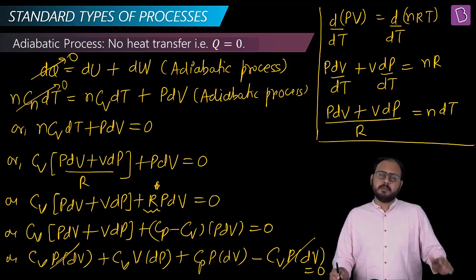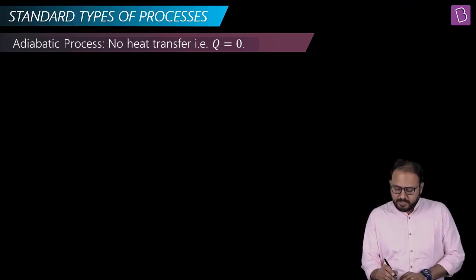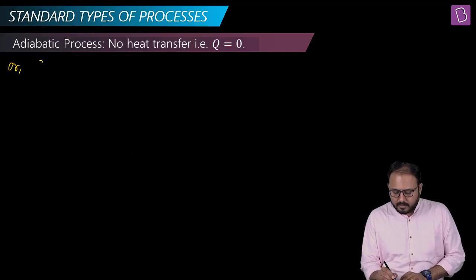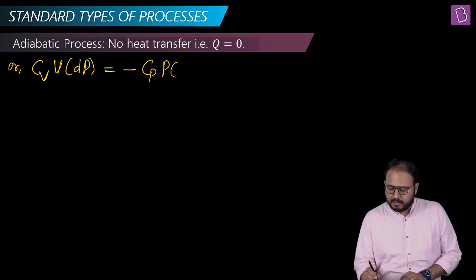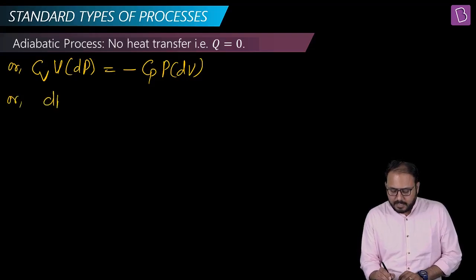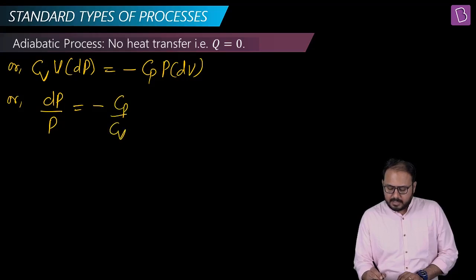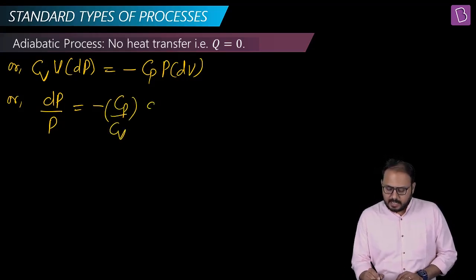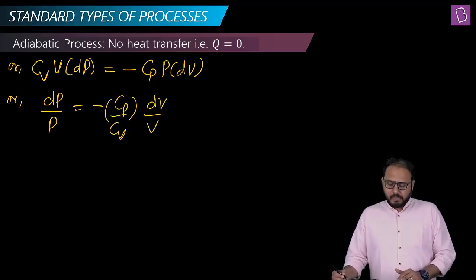What's left is Cv·V·dP + Cp·P·dV = 0. Taking terms to the other side: Cv·V·dP = -Cp·P·dV. Dividing both sides: dP/P = -(Cp/Cv)·dV/V. This looks correct.